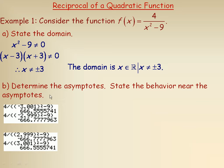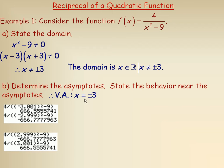In order to determine the asymptotes, the vertical asymptotes come from the restrictions on the domain. My abbreviation VA stands for vertical asymptote. Since x cannot equal 3 or negative 3 — those are the domain restrictions — the vertical asymptotes are x equals 3 and x equals negative 3. There are two vertical asymptotes.